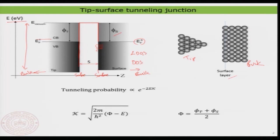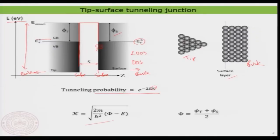We also familiarized ourselves with the tunneling probability — the probability that an electron can tunnel from the tip to the sample or vice versa — which is strongly dependent on the decay constant. The decay constant directly contains the work function, the average work function, and the distance between the tip and the sample. For electrons, the typical measurable tunneling barrier distance is in the order of a few nanometers maximum, although tunneling occurs even at larger distances but cannot be measured.